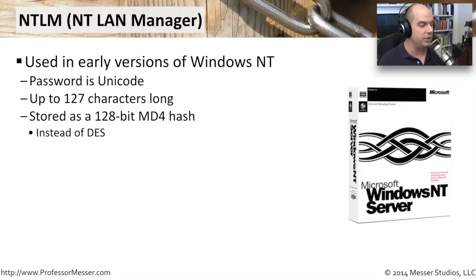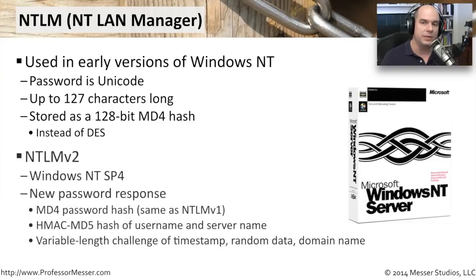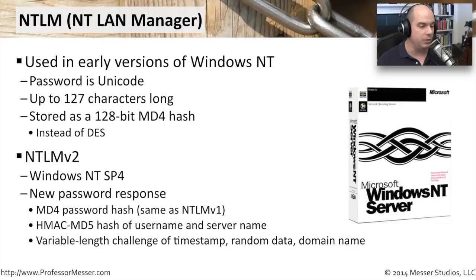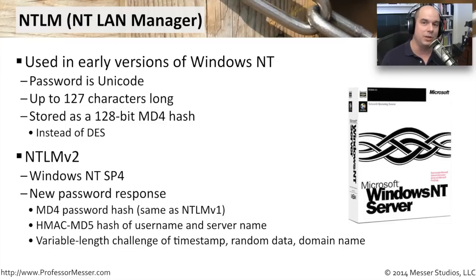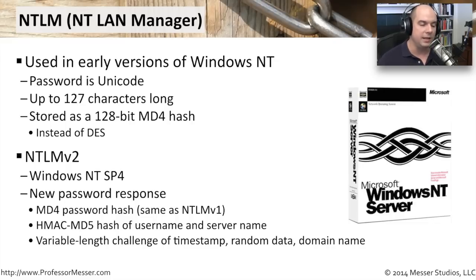Even that wasn't enough, so NTLM version 2 was released with Windows NT Service Pack 4, adding additional security. It included a new password response with an MD4 password hash — the same as NTLMv1 — but also added a hash of the username and server name combined. This introduced more randomness so the data wouldn't look the same every time. A variable-length challenge was also added, containing a timestamp, random data, and domain name information to make authentication more secure.